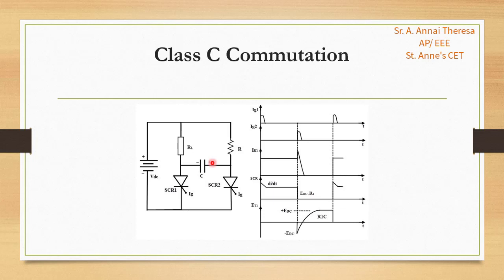If SCR 2 is triggered, the capacitor will be charged up. If SCR 1 is triggered, then the capacitor will discharge, and this discharging current will oppose the flow of load current through SCR 2. Due to this discharging reversing current applied to SCR 2, it will be turned off. This is about Class C commutation.